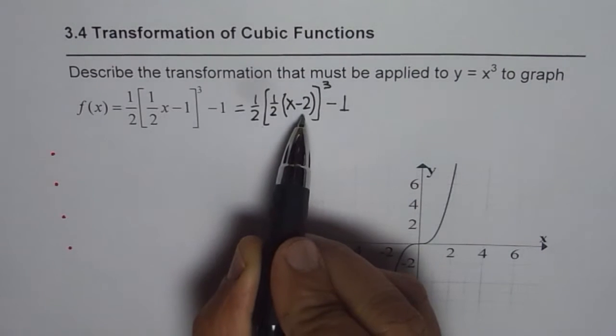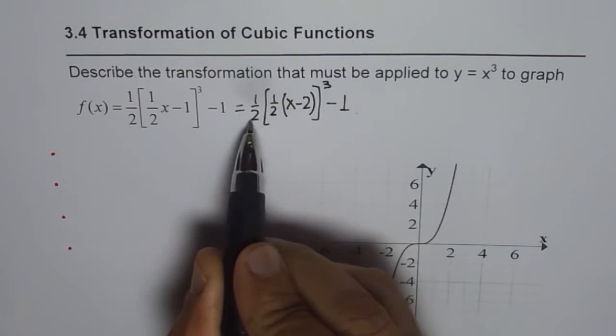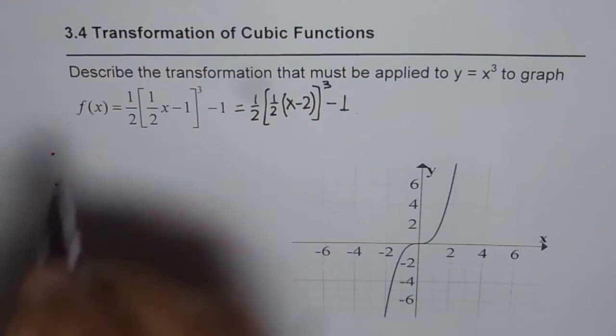Now you can read that it is horizontally translated 2 units to the right, not 1. If you do not do this then you may get wrong answer.